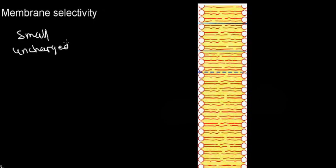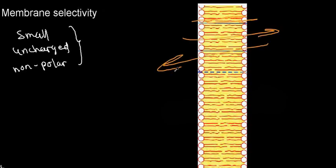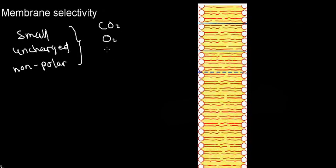This is my bilipid layer. What can go through it by itself? We know from thermodynamics that biological systems are open, so matter goes through. It just so happens that if you're a relatively small, uncharged, or non-polar molecule, you will be able to go through by yourself easily — just like CO₂, O₂, and nitrogen gas.